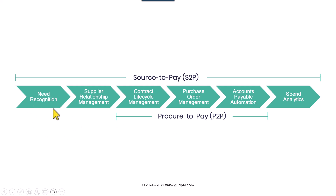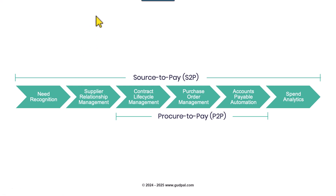The first step is the need to recognize a specific requirement for sourcing a product or a service. Then comes supplier relationship management. This is a very big process in itself wherein suppliers will be identified. They will be asked to fill up an RFI through which they will be shortlisted and sent for internal review and approval.